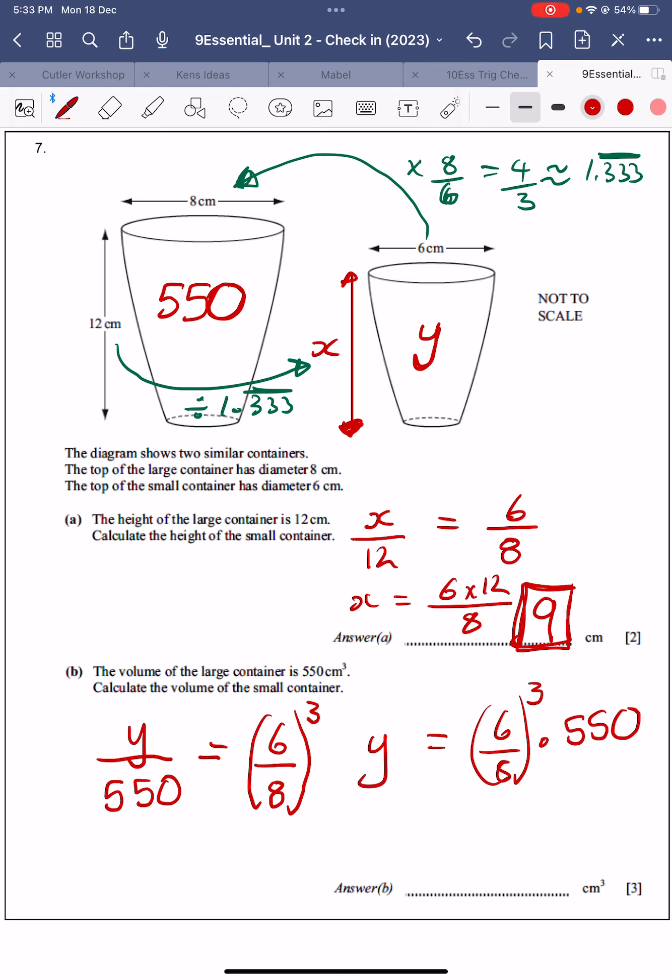and that is times by the 550. I press enter, and I have that as 232.03 centimeters cubed, 232 centimeters cubed to 3 sig fig is good.